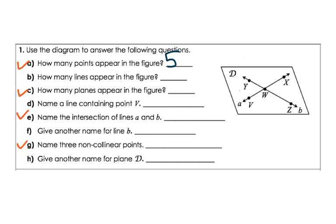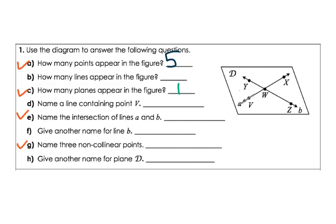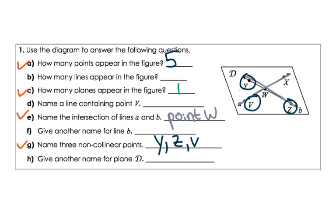How many planes appear in our figure? That would be plane D, so that would be 1. Name the intersections of line A and B. We find line A, then line B — they both meet at a point and that would be point W. And finally, name 3 non-collinear points — points that do not form a line. There are multiple answers. One example is Y, Z, V — as you see, they do not form a straight line. You could also have done Y, W, X or W, Z or Z, W, X.